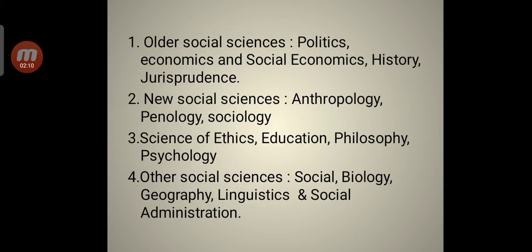Older social sciences are Politics, Economics and Social Economics, History, and Jurisprudence. New social sciences are Anthropology, Penology, and Sociology. Other new social sciences are the Science of Ethics, Education, Philosophy, and Psychology.